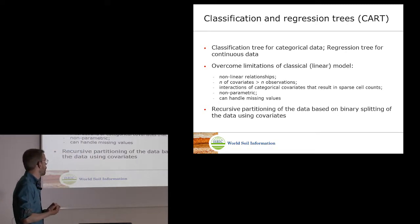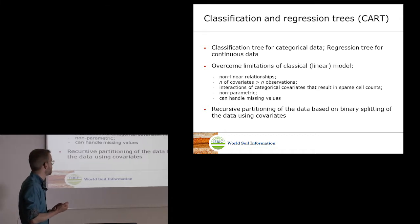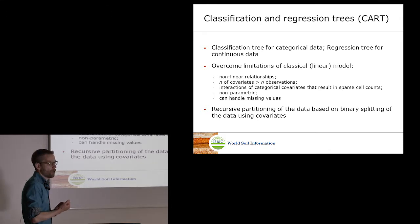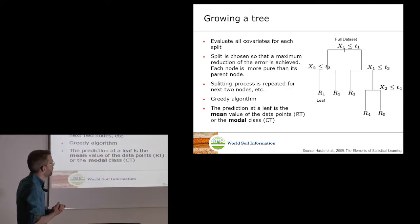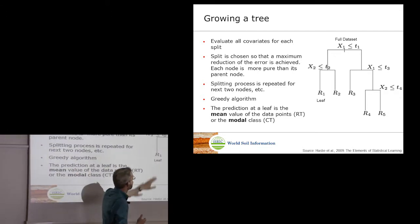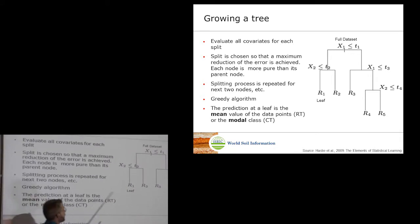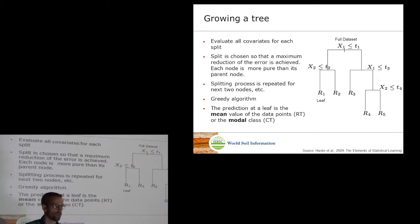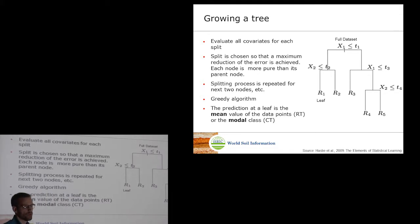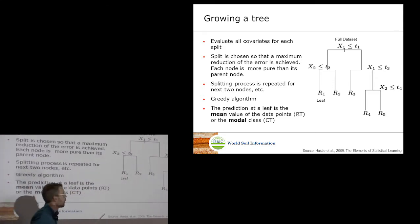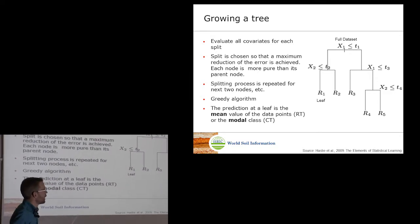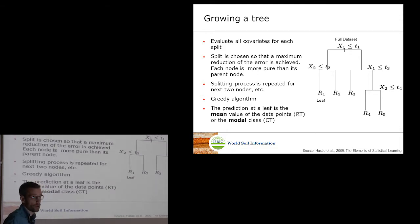Tree modeling is based on what we call recursive partitioning of data, based on binary splitting using covariates. So tree models are data splitters. Basically, when you grow a tree, you start at the top with your complete dataset — say 100 soil samples for which you measured carbon. The tree model is going to split your dataset in two, and it does that repetitively.